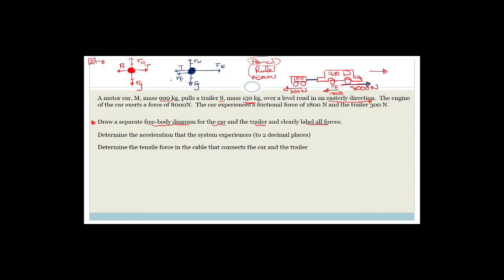Now it says determine the acceleration of the system. There is an F net because there has to be one if there's acceleration. The net force is always the sum of all the forces. We're going to choose the direction the car is moving as positive, which means everything else is negative.